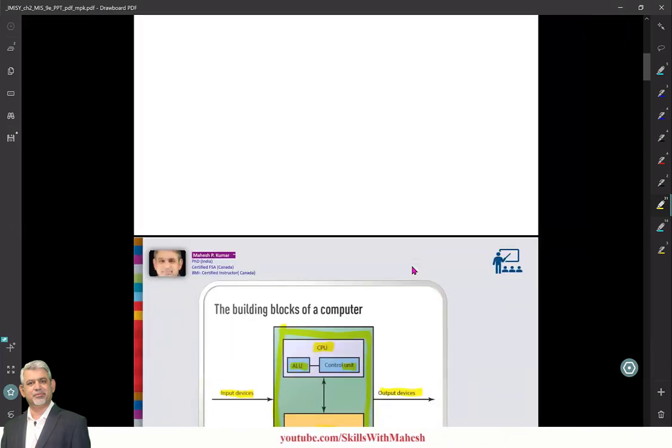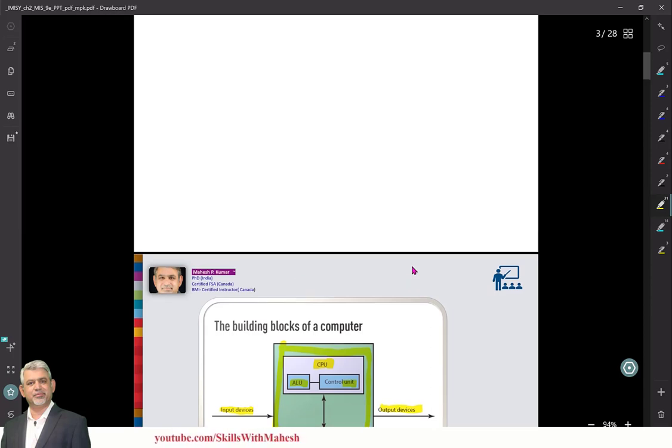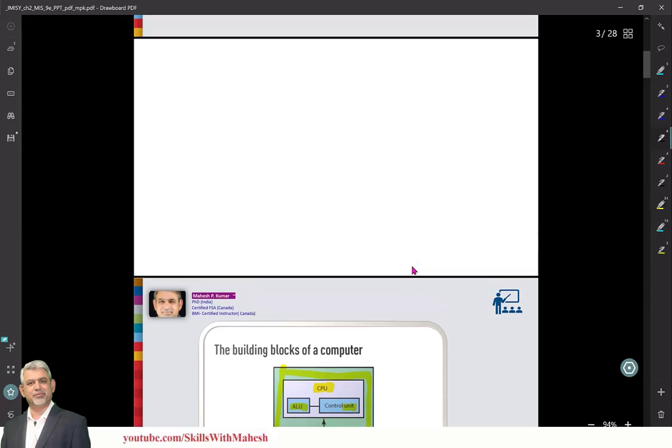Input devices, central processing unit, output devices. This is a systems diagram but we can understand that with the actual diagram also. This is the computer that we actually see.